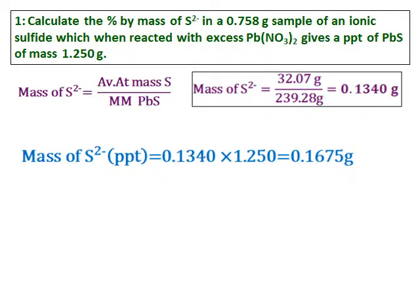The mass of precipitate is 1.250, so that is PbS. Using the calculation just done, I can calculate the mass of sulfide in the precipitate. And that is the mass of PbS, mass of sulfur in PbS times the mass of PbS separated out. And once I calculate that, that is coming as 0.1675.